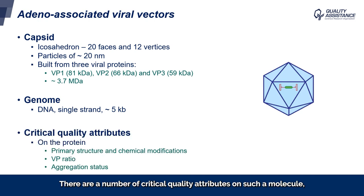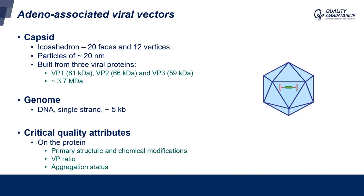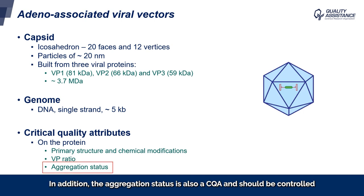There are a number of critical quality attributes on such a molecule, either on the DNA for its identity and integrity, or on the protein. For the protein, the amino acid sequence and the presence of various chemical modifications, as well as the VP ratio, are identity and integrity tests. In addition, the aggregation status is also a CQA and should be controlled, as AAVs are prone to aggregation and sensitive to freeze-thaw cycles.